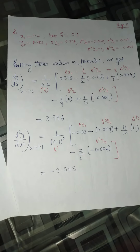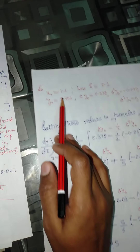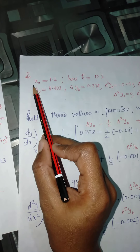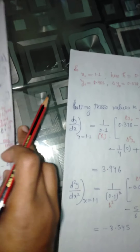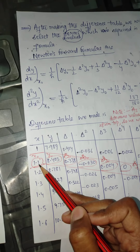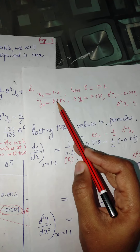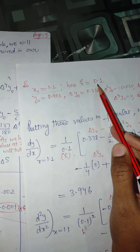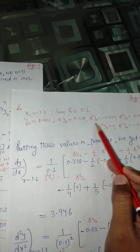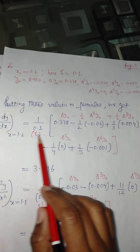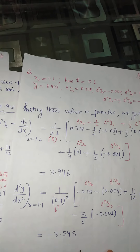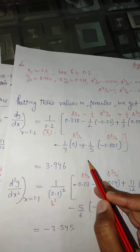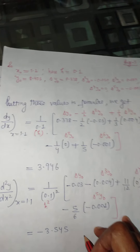Now we substitute all values into our formula. In our case, x₀ = 1.1, the corresponding y₀ = 8.403. We identify the step size h and the corresponding differences, choosing the second value from each column of the difference table. Substituting all these values into the formula and performing the calculations, we arrive at the answer for both the first derivative and the second derivative.